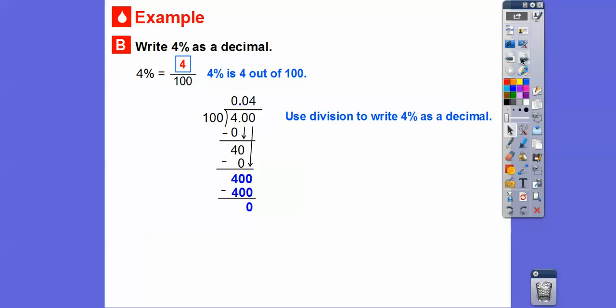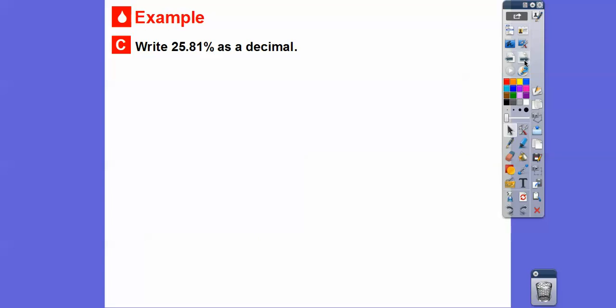And then 100 goes into 400 four times. And so when we subtract, we get 0. Finally, we can stop dividing because we've got a remainder of 0. So the 4% equals 0.04 right there. 40% equals 0.4, but 4% equals 0.04. Remember, the decimal is right there, and the trick is just move it two places to the left. We get 0.04 right there.